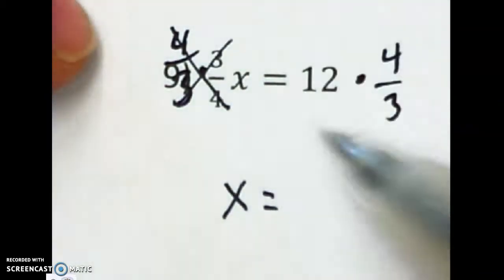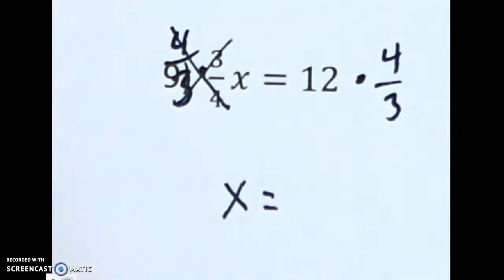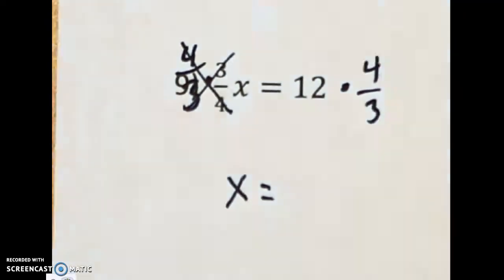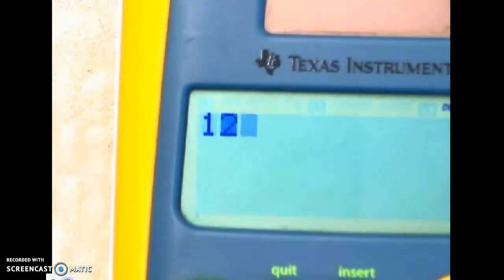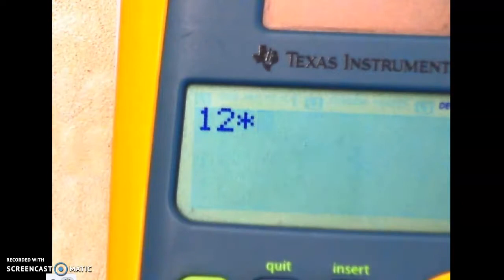On the right, you need to be able to multiply this. So I'm going to do it on the calculator so that you can see how to do that, and then I'll do it by hand. So here's how you do that on the calculator. I'm going to type in 12 and times it by that fraction, 4 divided by 3, and hit enter.